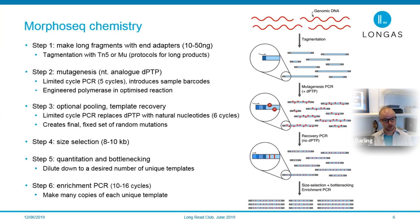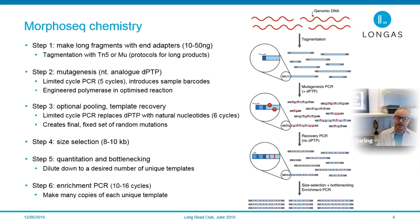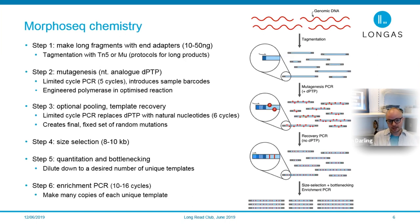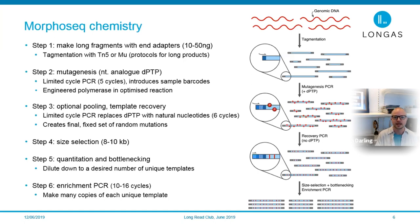The first step is to make long fragments with end adapters. We take 10 to 50 nanograms of input and use a tagmentation reaction — either TN5 or Tn5 — with the protocol adapted to generate long templates. The next step is mutagenesis, where we use a nucleotide analog DPTP in conjunction with an engineered polymerase, in a reaction we spent a lot of time optimizing to introduce mutations into these long templates. We also introduce sample barcodes at this stage so all samples can be pooled into a single tube.